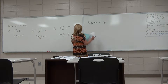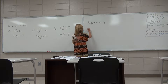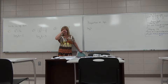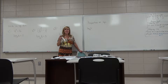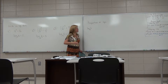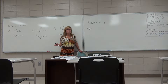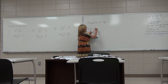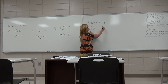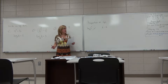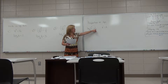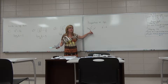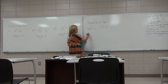Properties of logarithms. First: if you have log base b of b, any time your base is the same as your argument, you're asking yourself, 'b to what power equals b?' The exponent understood to be on that is 1. So this equals 1. Put in exponential form: b to the first power equals b. Any time your base is the same as your argument, it always equals the exponent, which is understood to be 1.